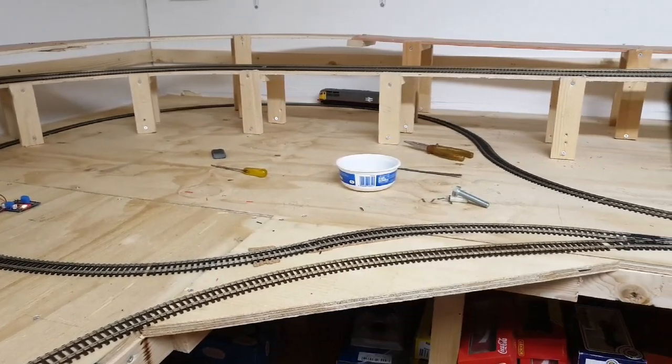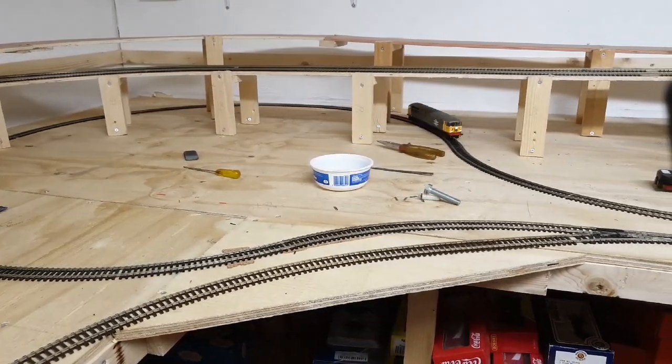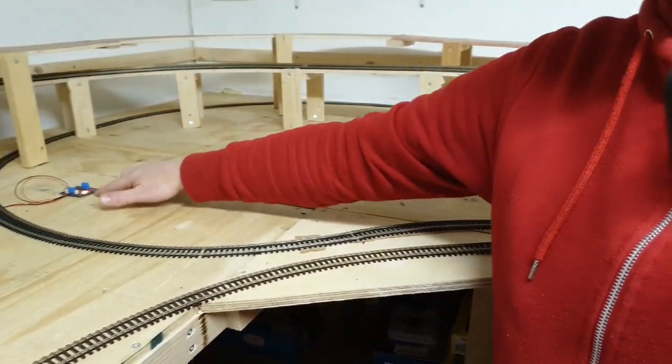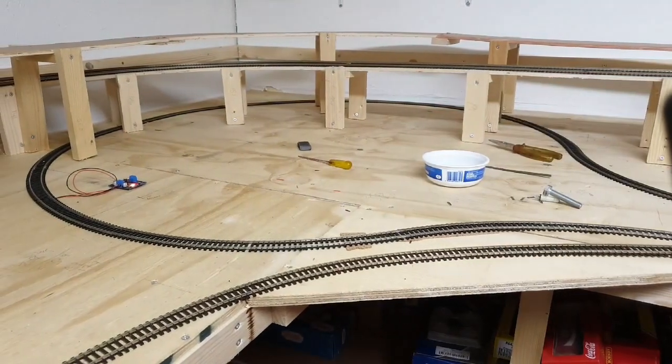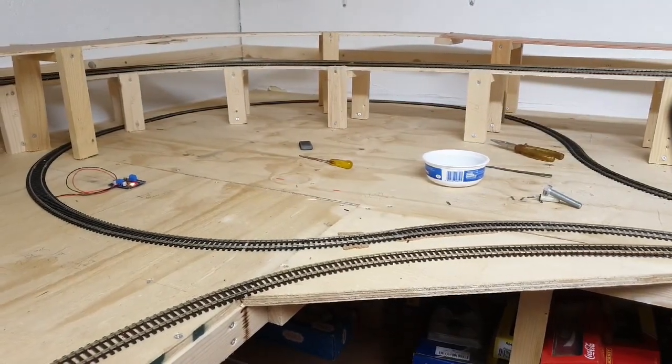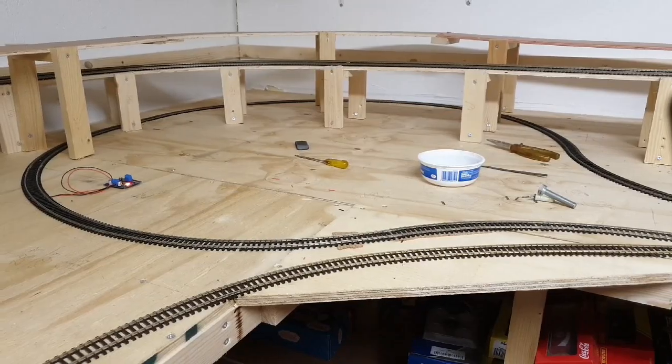There we go. Quite a successful test. So that shows that it's working. I don't know if you were able to pick up the lights flicking over to show the polarity changed. That means that will stop any shorts happening when you're running your loco around.